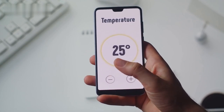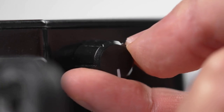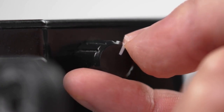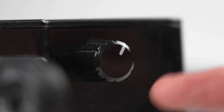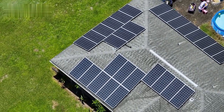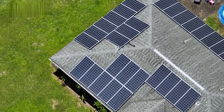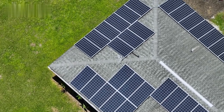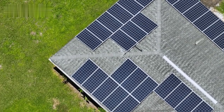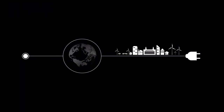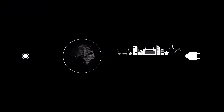Further future work includes improving the user interface and expanding support for different platforms and devices. The Home Energy Management System project successfully demonstrated the potential of smart technology in reducing household energy consumption and costs. By leveraging real-time monitoring, intelligent control, and user-friendly interfaces, the system empowers homeowners to take an active role in managing their energy use, contributing to both economic savings and environmental sustainability. As the technology matures, HEMS has the potential to become a standard feature in modern homes, driving the adoption of sustainable energy practices on a global scale.